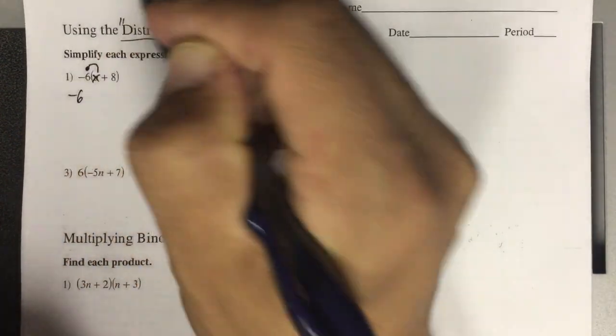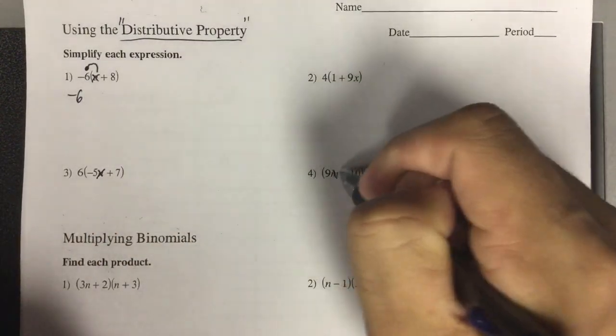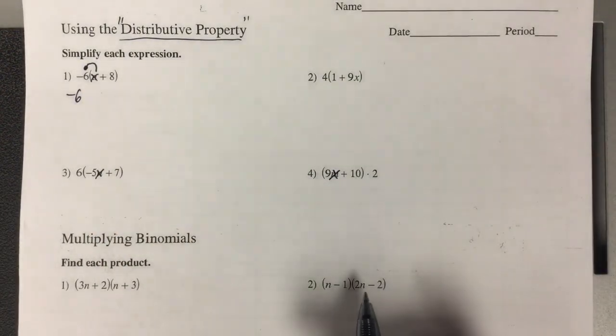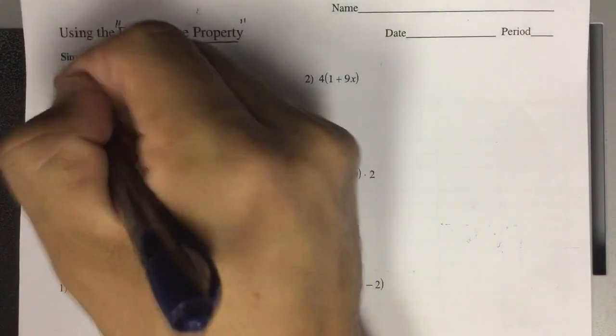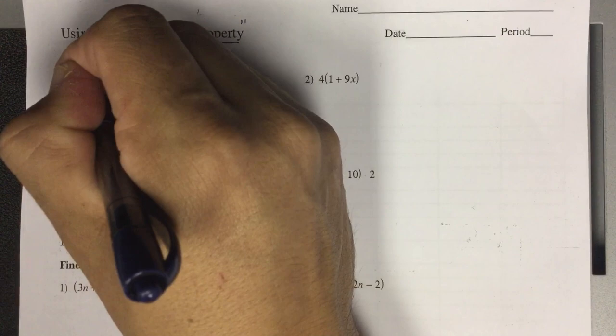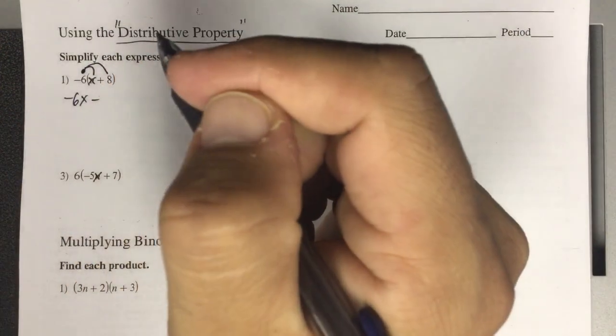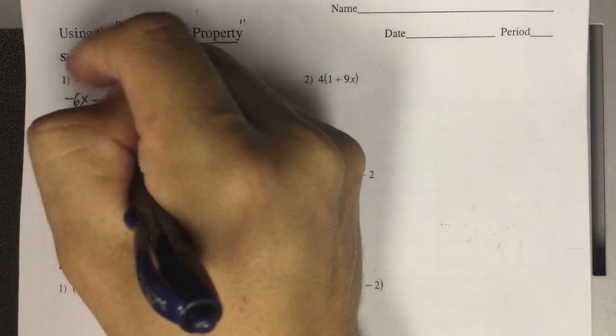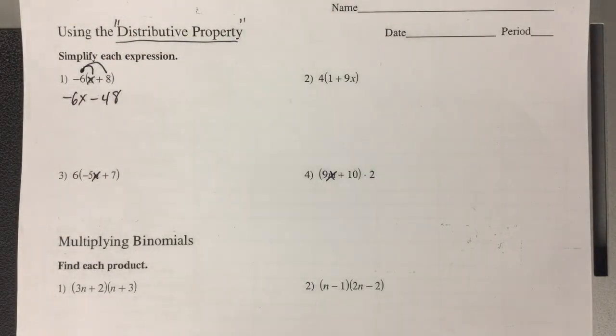We're going to change all of these to x, so all the variables are going to be x, just so you can't find the answer so easily. Negative 6 times x is negative 6x. Negative 6 times positive 8 is negative 48. So that's distribution right there.